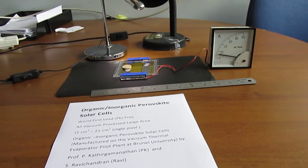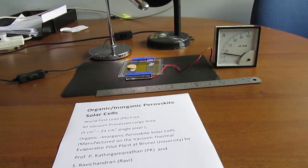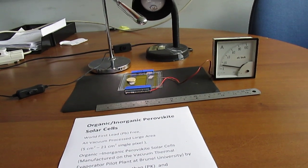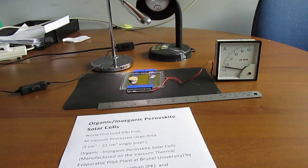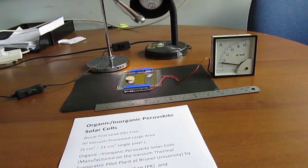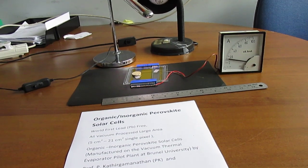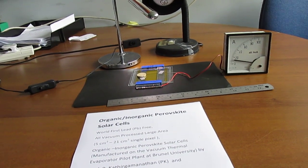It's a single pixel large area made exclusively by vacuum method and encapsulated in a glove box. This is the world's first large area perovskite-based organic-inorganic perovskite solar cell.